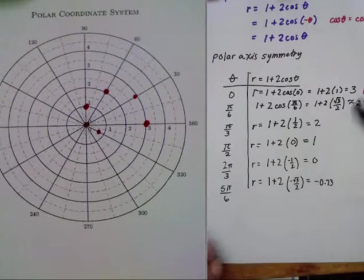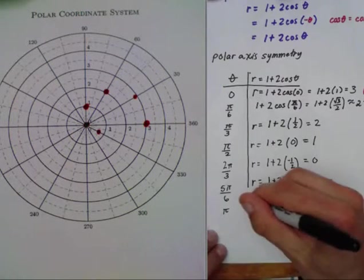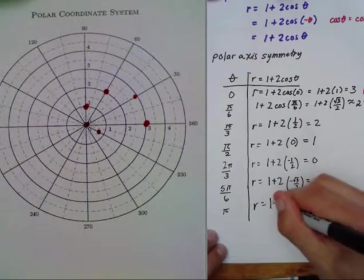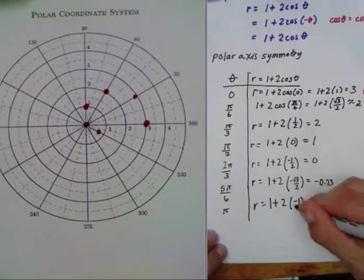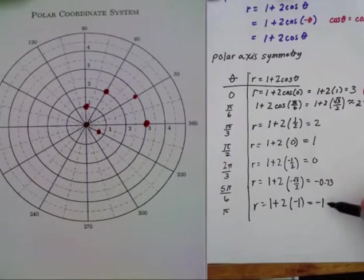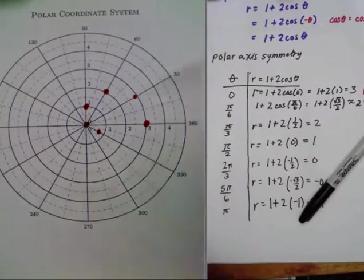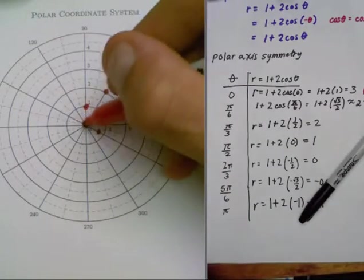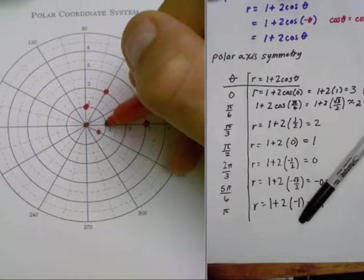Let's go ahead and put pi in there. The cosine of pi is negative one, so negative two plus one is negative one. I'm going to plot negative one at pi. I go out here, here's pi, and negative one is right there.